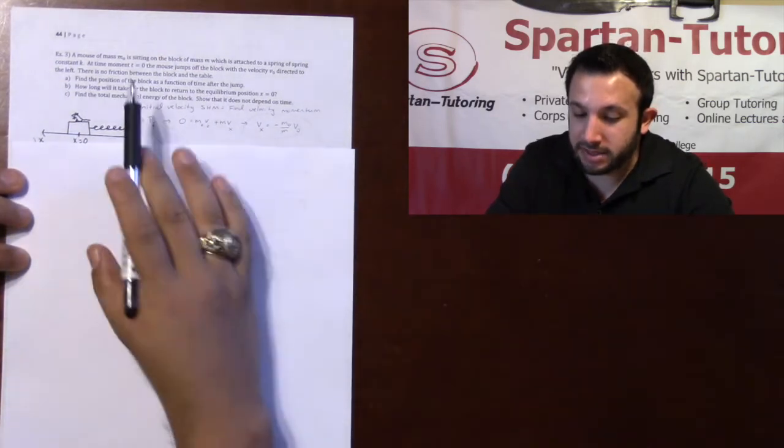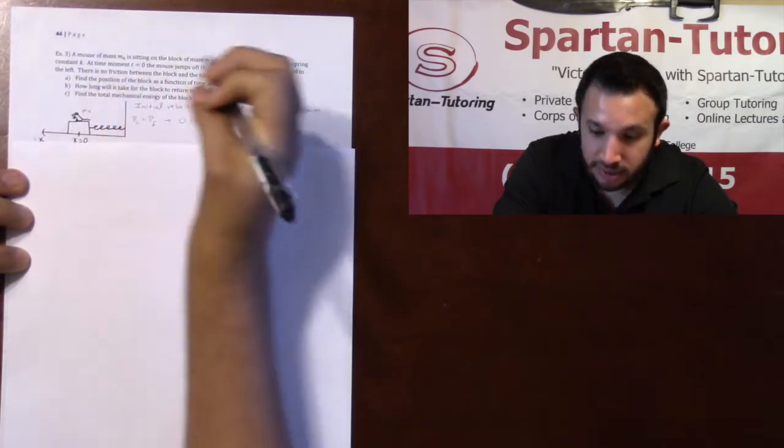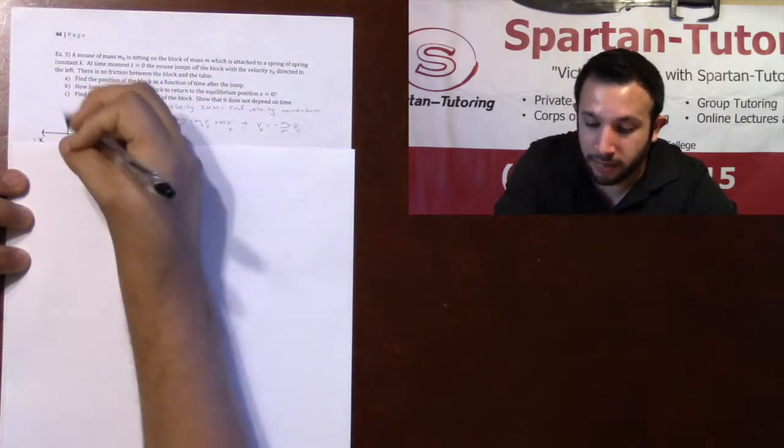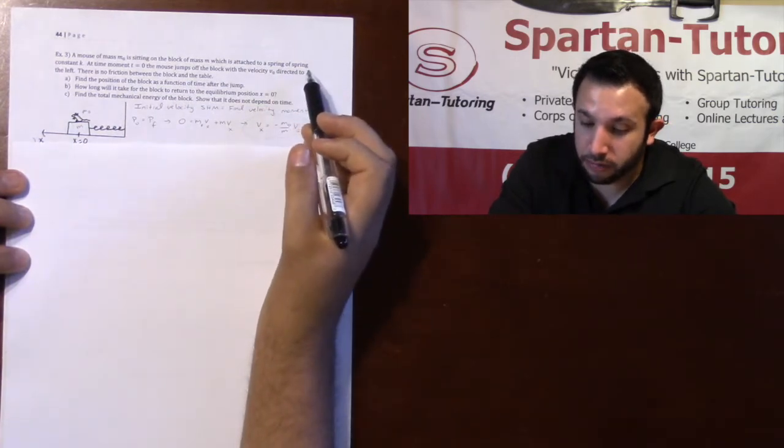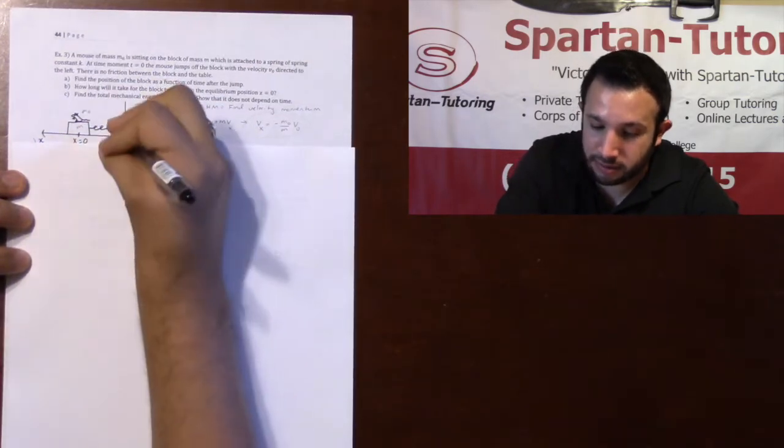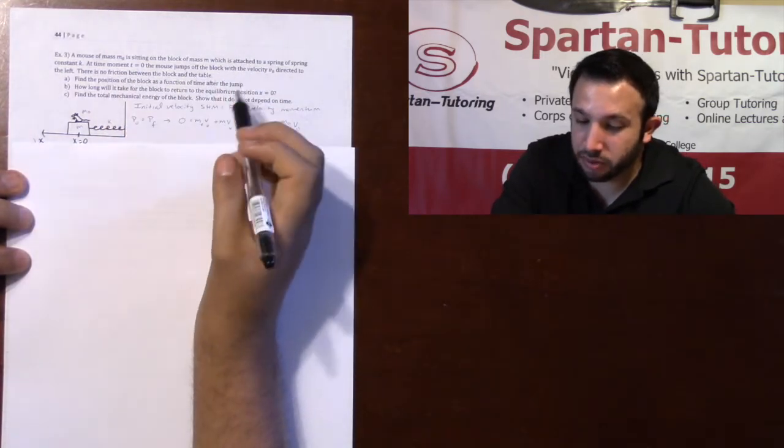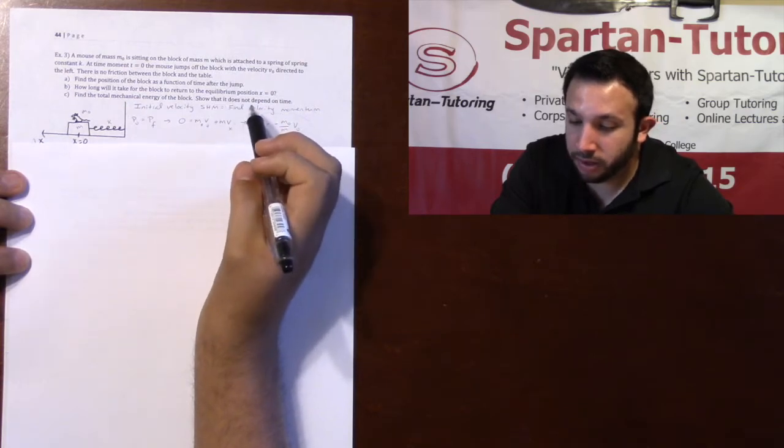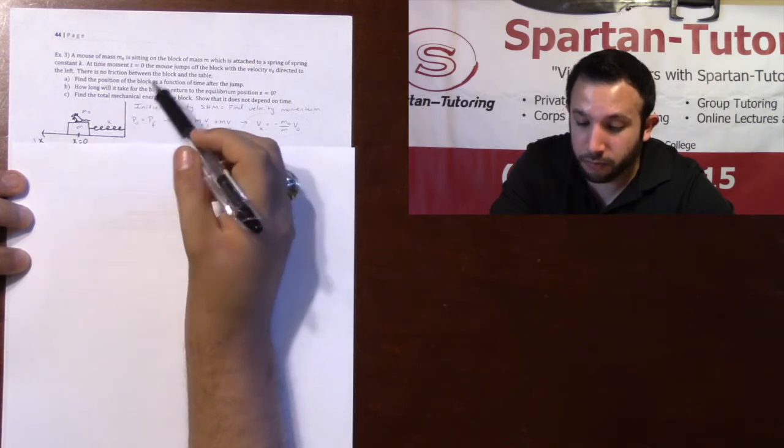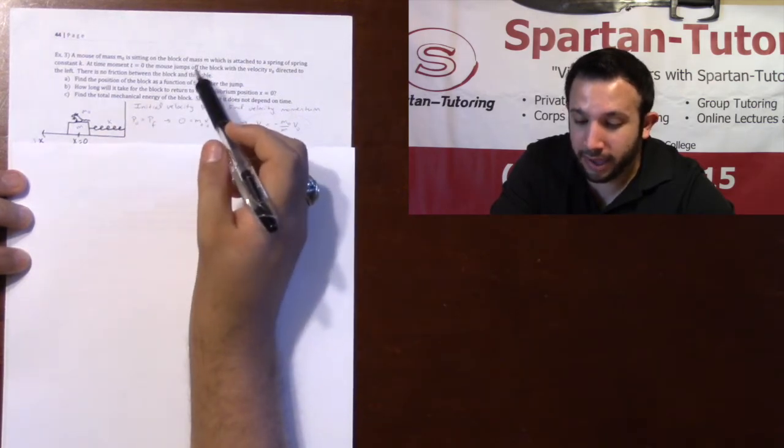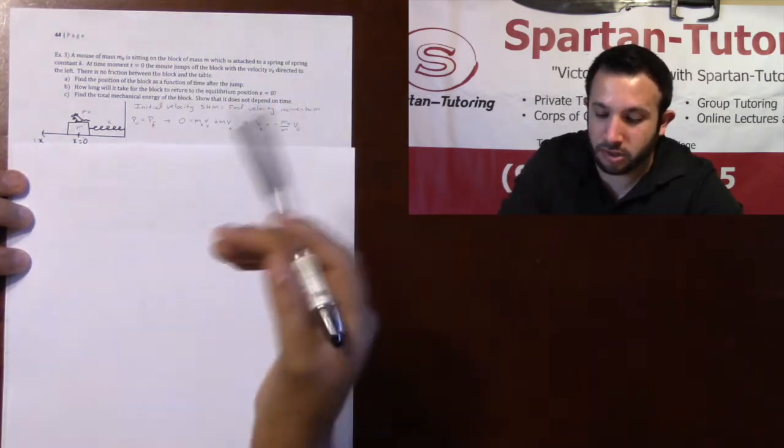So let's take a look at this third one. It says that a mouse of mass m0 is sitting on a block of mass M, which is attached to a spring of spring constant k. At time moment t equals zero, the mouse jumps off the block with a velocity v0 directed to the left. There is no friction between the block and the table. In part A, find the position of the block as a function of time after the jump.